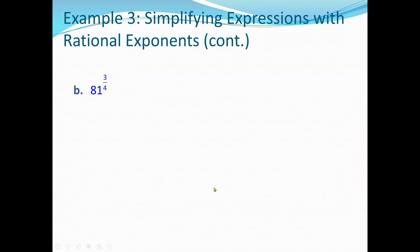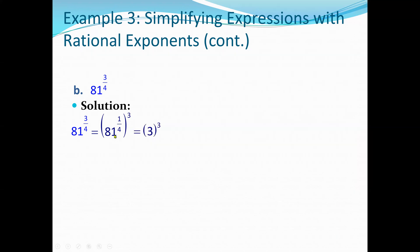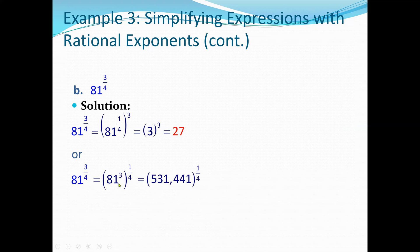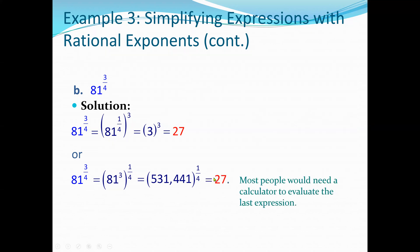Another example: 81 to the power three-fourths. We can write this as 81 to the one-fourth, raised to the power 3. Since 3 × 3 × 3 × 3 = 81, the fourth root of 81 is 3, and 3 cubed is 27. Alternatively, 81 cubed to the one-fourth: 81 multiplied three times gives 531,441, and the fourth root of that is also 27. The first approach using smaller values is preferred, but both give the correct answer.